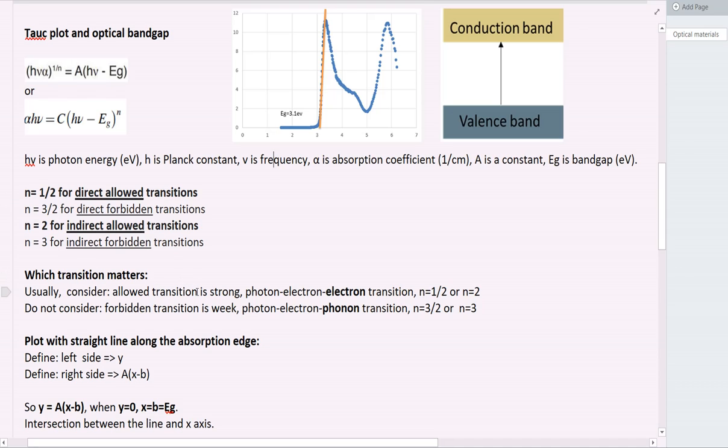Usually, material will have direct and indirect, referring to direct band gap or indirect band gap. So we can search the literature and find that. We also have allowed transition and forbidden transition. Which one should we use? Allowed transition usually is very strong, so it's related to photon-electron transition. So generally, we should use this.